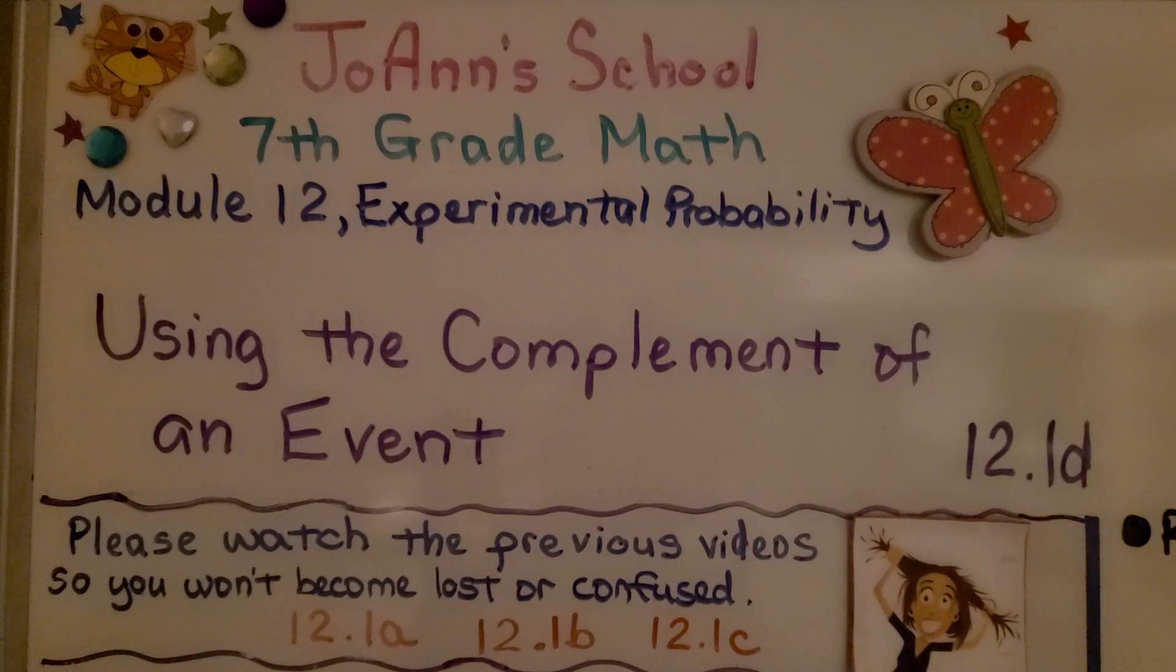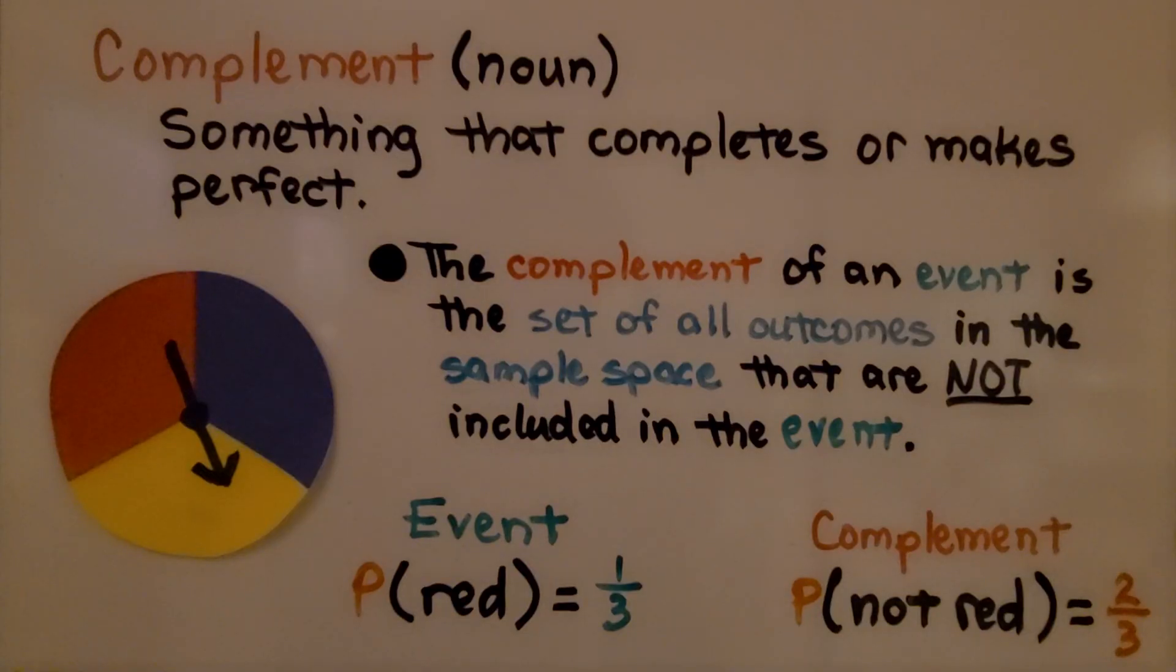We're at lesson 12.1d, using the complement of an event. The word complement is a noun. It's something that completes or makes perfect. The complement of an event is a set of all outcomes in the sample space that are not included in the event.